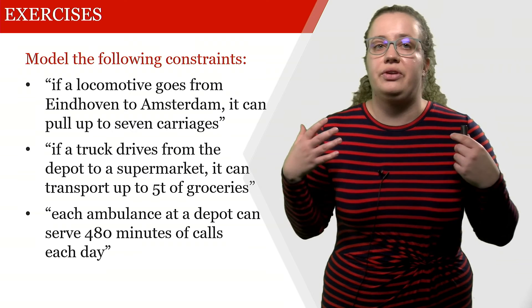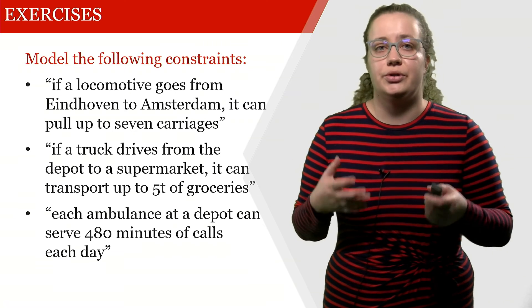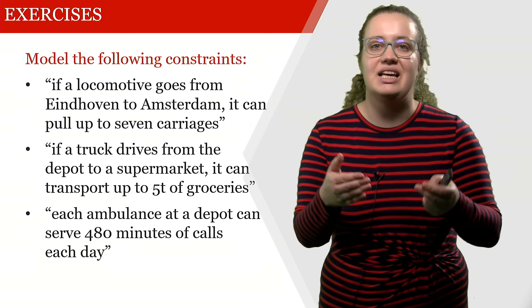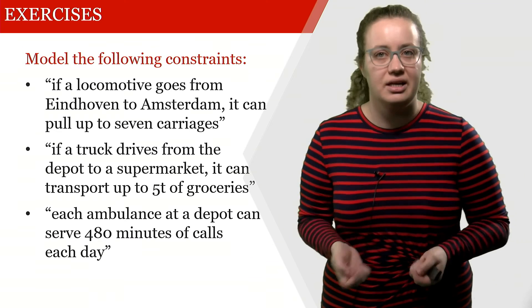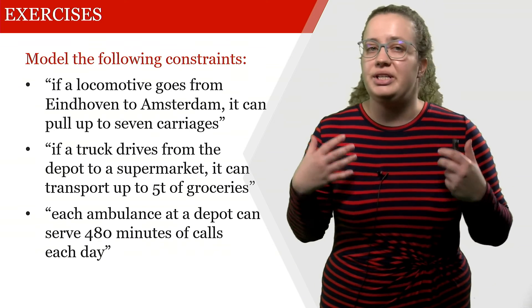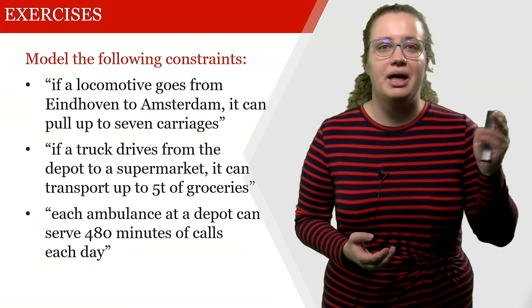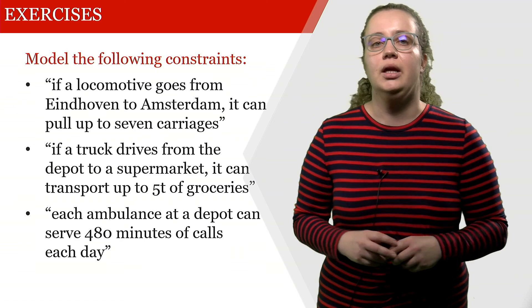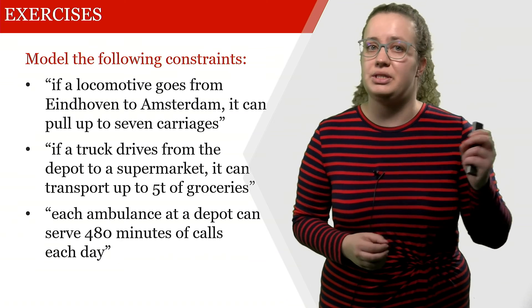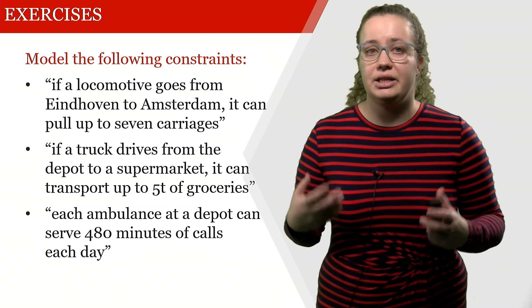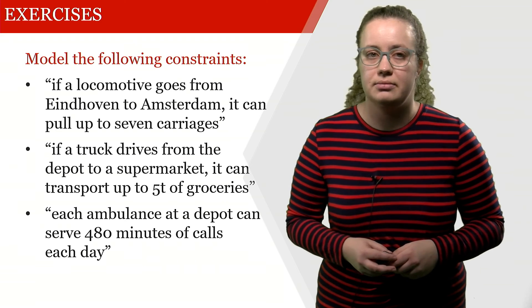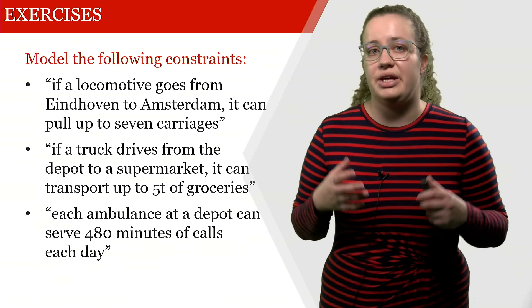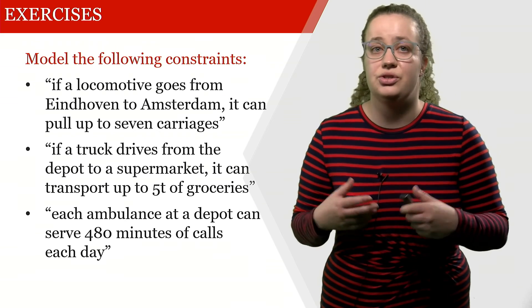So what you're going to do is model those following constraints and determine the M that is as small as possible without cutting off any optimal solution. For instance, if a locomotive goes from Eindhoven to Amsterdam, it can pull up to 7 carriages. If a truck drives from the depot to a supermarket, it can transport up to 5 tons of groceries.